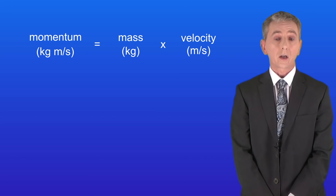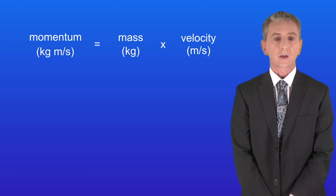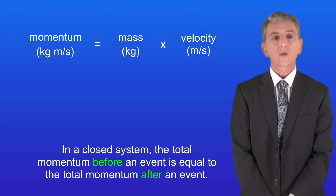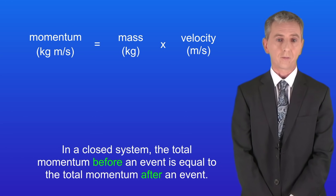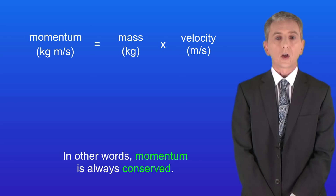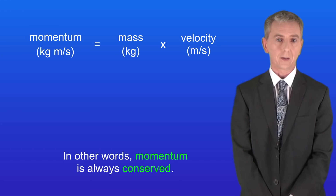In the last video we started looking at momentum. We calculate momentum using this equation: momentum equals the mass multiplied by the velocity. Remember that in a closed system the total momentum before an event is equal to the total momentum after an event. In other words, momentum is always conserved. So in this video we're going to use the conservation of momentum to carry out calculations involving an event such as a collision.